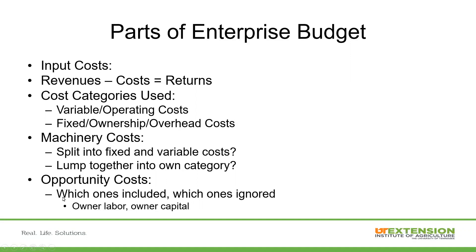We look at the input cost, revenues minus costs and returns, and we have those broken down further as far as cost categories. Variable costs or operating costs are related to what is kind of used up over the course of the year. Your fixed or ownership costs would be more in your equipment, land costs, or overhead costs as well.